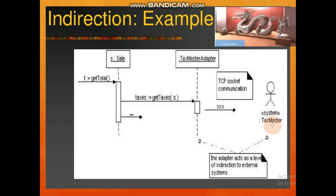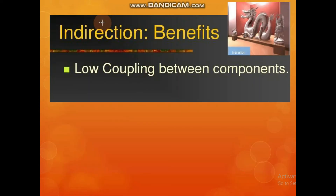This TaxMaster Adapter acts as an indirection and an intermediator. It acts as an intermediate and reduces the direct coupling. The benefit of the Indirection pattern is low coupling between components — these components support low coupling.